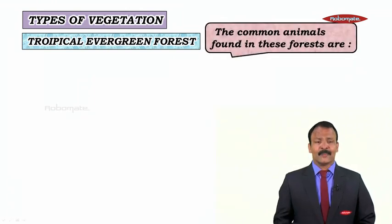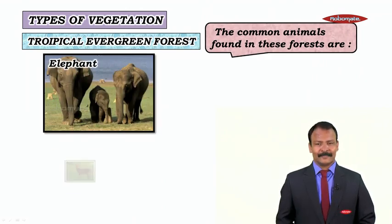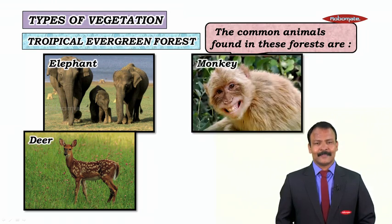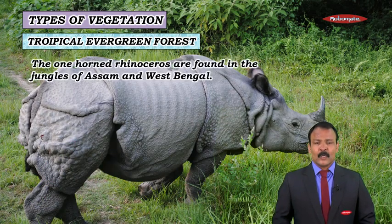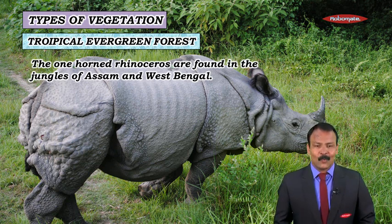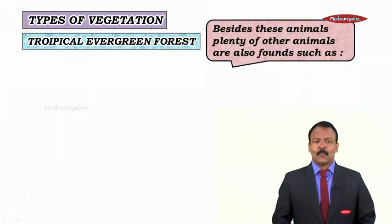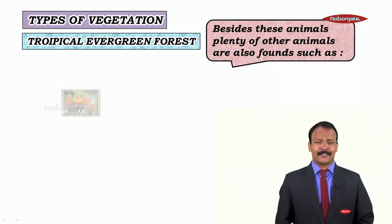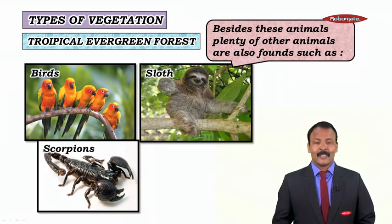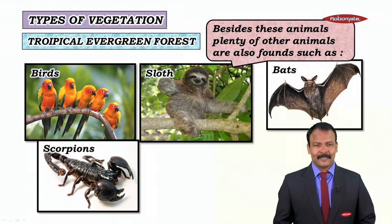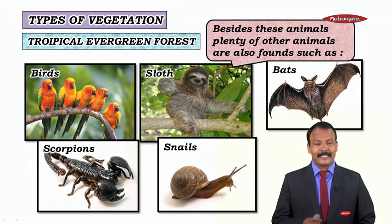The common animals found in these forests are elephant, deer, monkey, and lemur. One-horned rhinos are found in the jungles of Assam and West Bengal. Besides these animals, plenty of others are found in these regions such as birds, scorpions, sloths, bats, and snails.